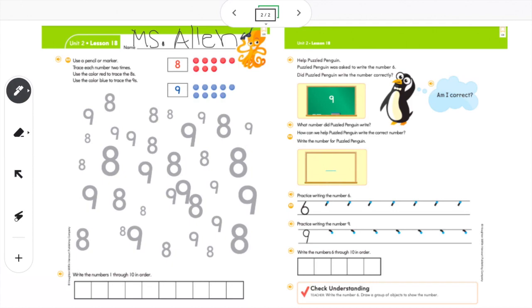It says use a pencil. Trace each number two times. Use the color red to trace the eights. Use the color blue to trace the nines. Oh! So it looks like we're going to need our crayons. Go ahead and quickly grab your crayon box. Find your red crayon and your blue crayon.